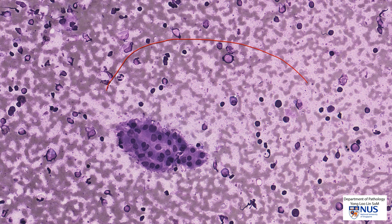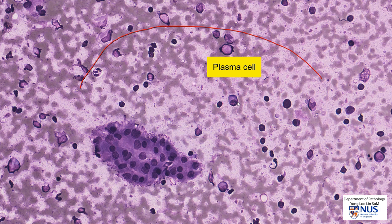Another inflammatory cell that may be seen in the context of Hashimoto thyroiditis is the plasma cell, with the eccentric round nucleus and the perinuclear hof. This can be a helpful feature if we are considering the possibility of autoimmune or Hashimoto thyroiditis.